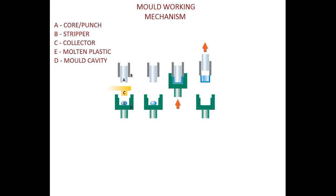Let's understand the working principle or we can say mold working mechanism. As you can see, there are certain alphabets marked on the picture: A, B, C, E, and D. A is the core or punch part of the mold, B is the stripper, C stands for the collector, E is the molten plastic, and D is the mold cavity.